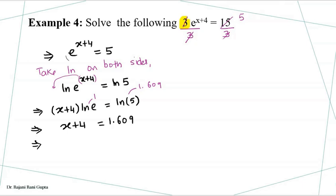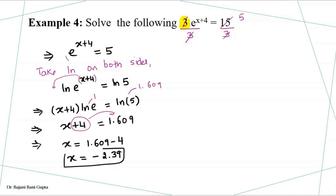So we get x plus 4 times 1 equals 1.609, which gives x plus 4 equals 1.609. Moving the plus 4 to the other side gives x equals 1.609 minus 4. Using a calculator, this gives us x equals minus 2.39. This is the general idea of how we solve this kind of question.